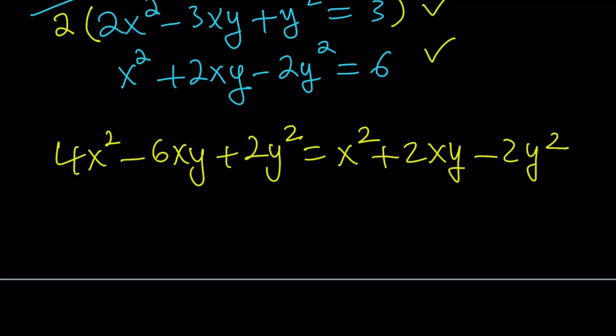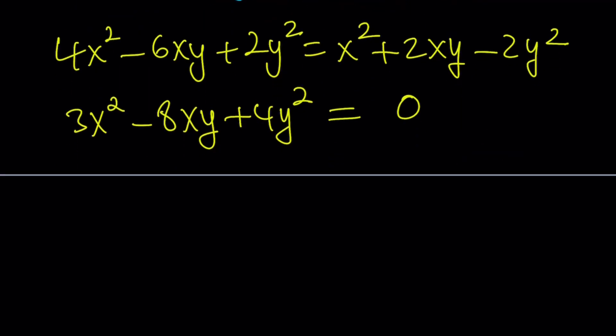Now, let's go ahead and put everything on the left hand side. 3x² - 8xy + 4y² = 0. Awesome. We've got a homogeneous equation from two non-homogeneous equations. Now, we should be able to solve this, find the values and then plug in and get to the answer. Let's do it.